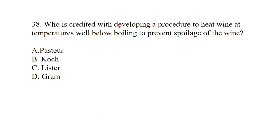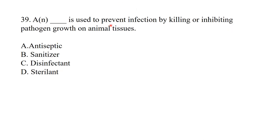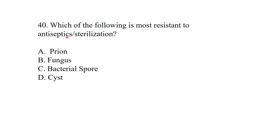Who is credited with developing procedures to heat wine at a temperature well below boiling to prevent spoilage? It was Pasteur, who used the process of pasteurization. A substance used to prevent infection by killing or inhibiting pathogen growth on animal tissue is an antiseptic. Antiseptics are used on animal tissues.